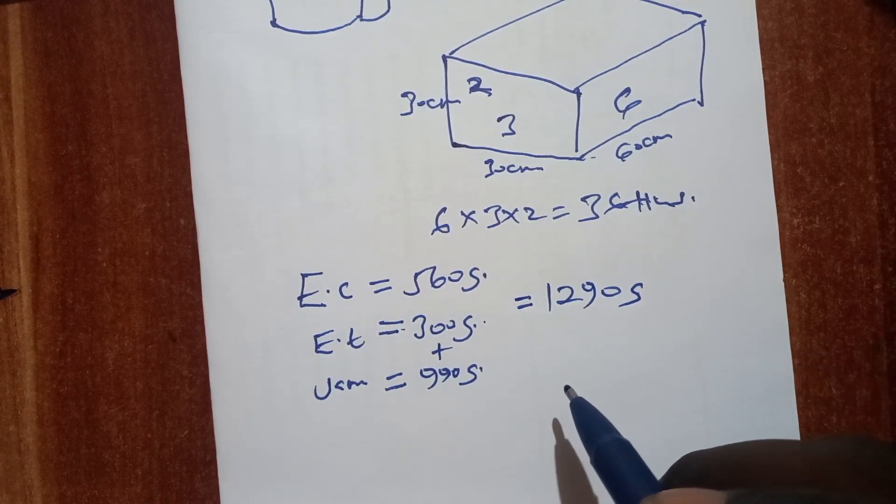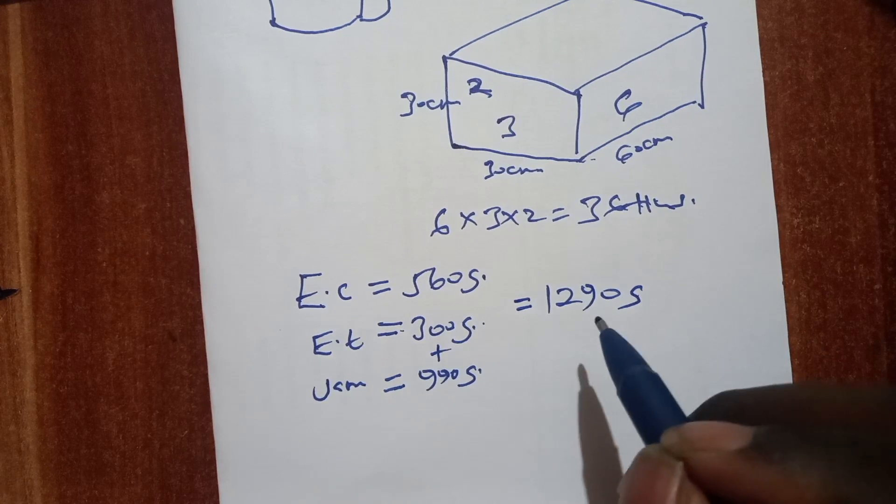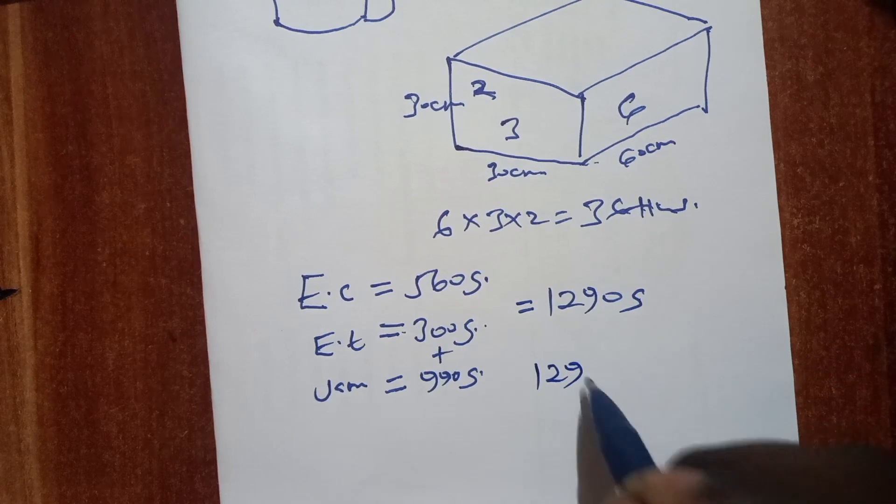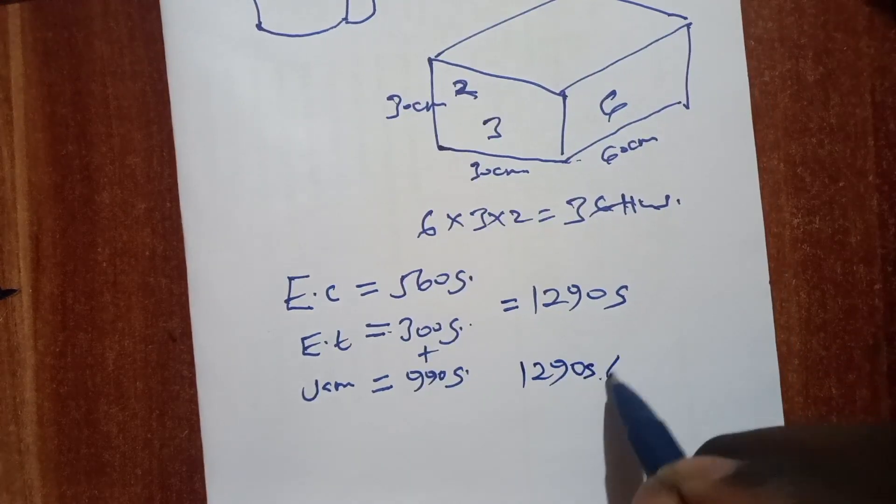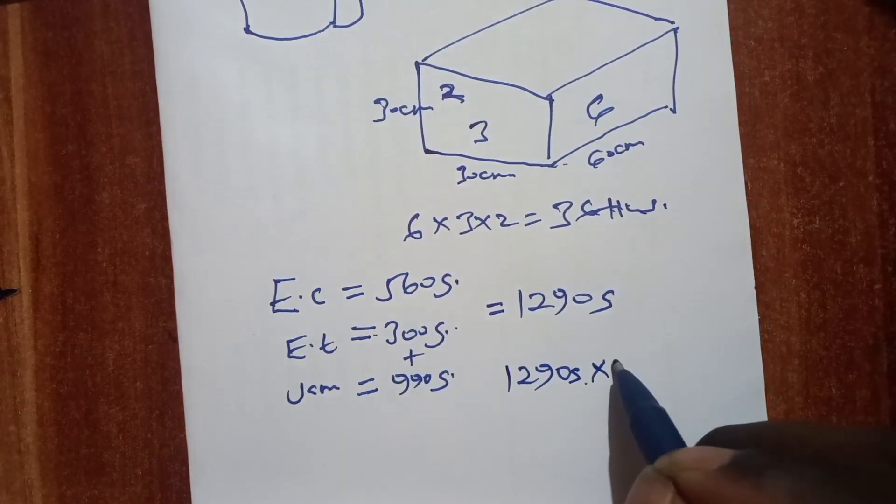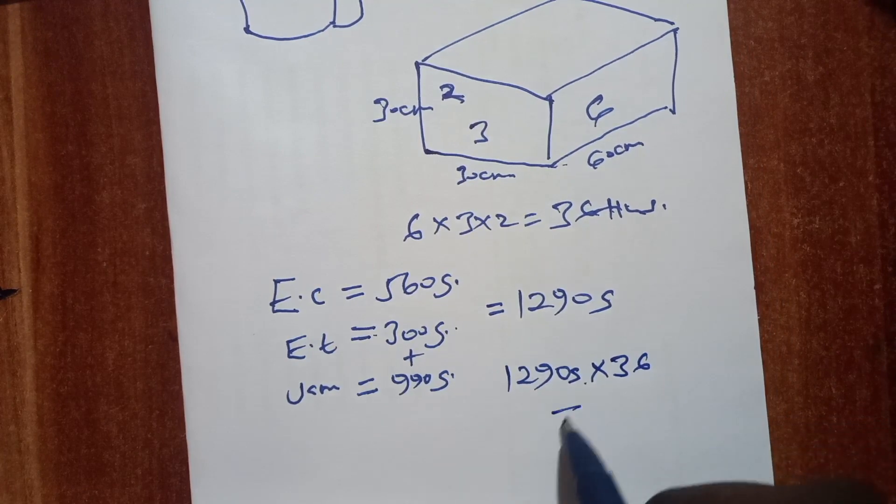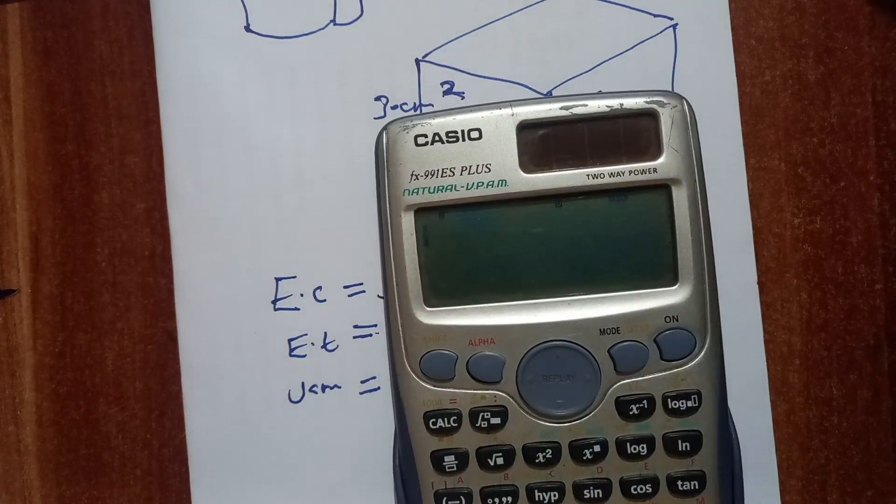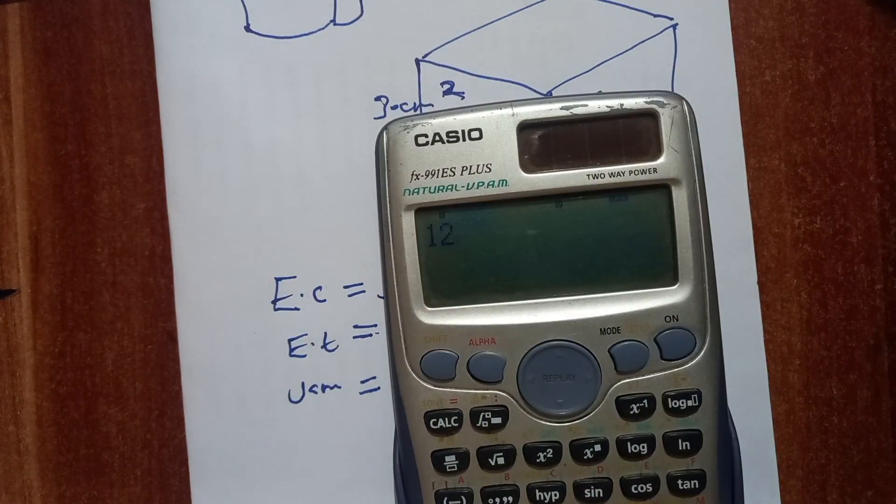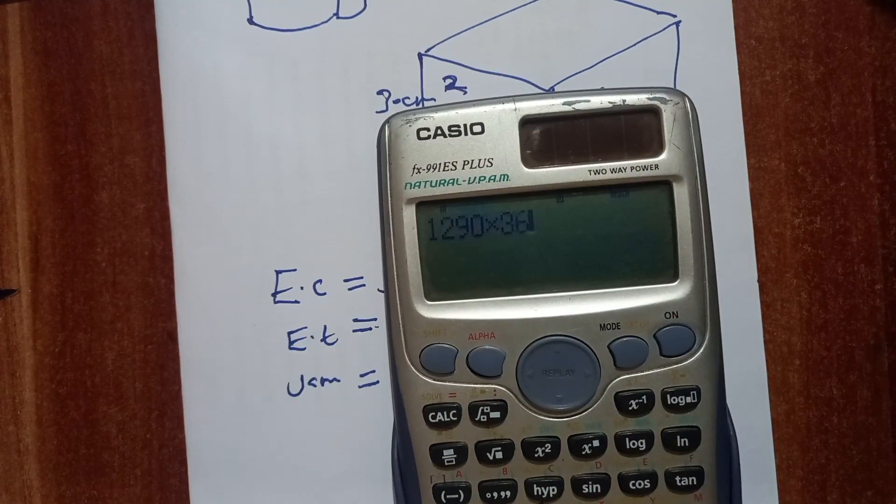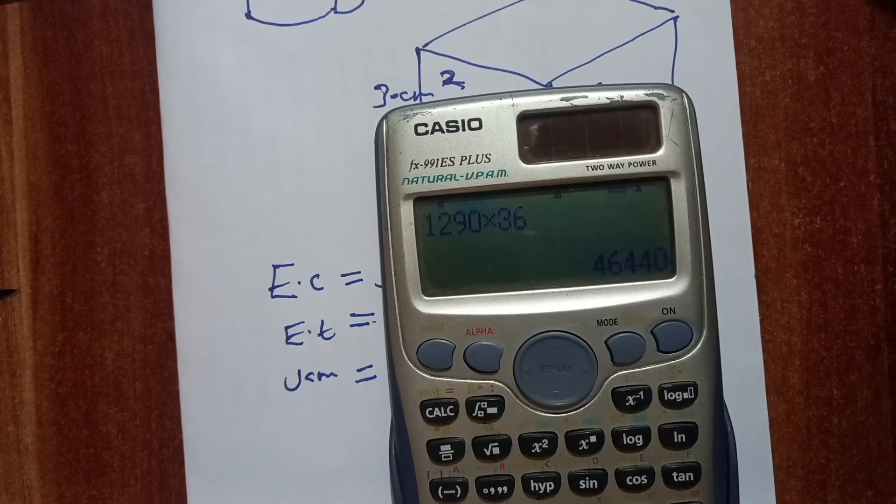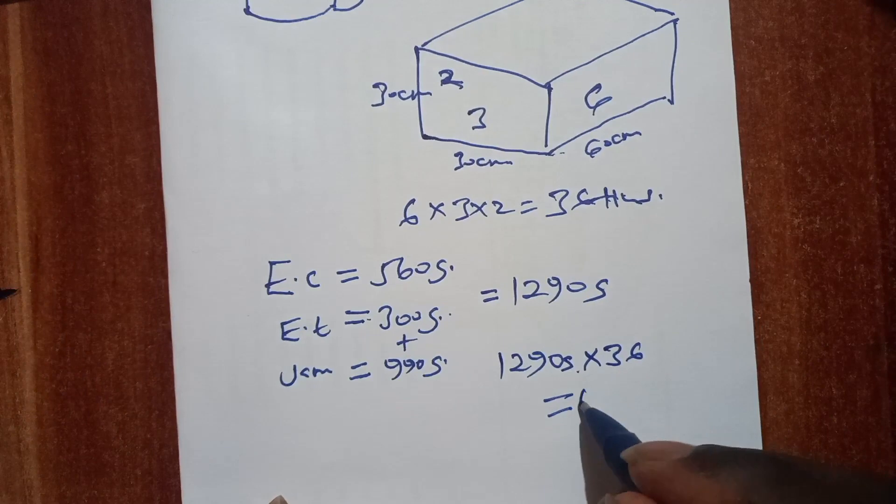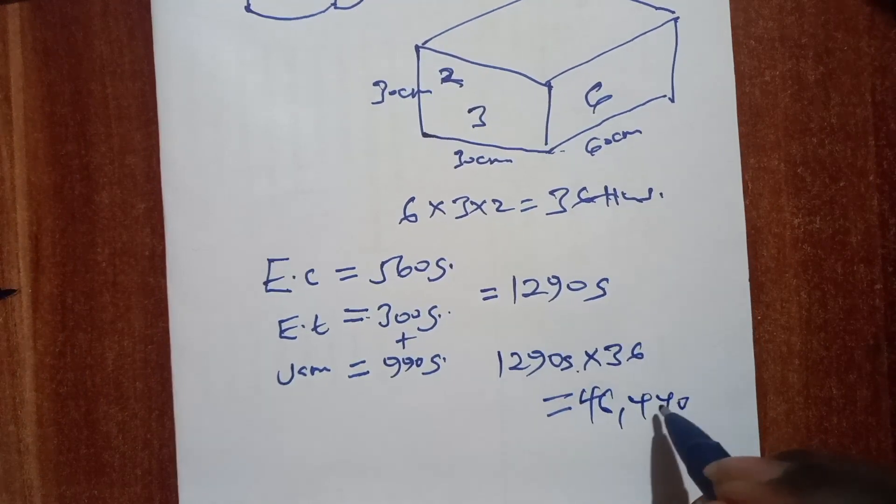And since we know that each carton has 36 tins, we are going to take 1290 grams multiplied by 36 tins. 1290 by 36 gives us 46,440 grams.